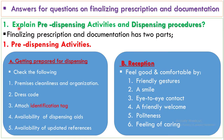The first question explains the predispensing activity and dispensing procedure. Finalizing prescription documentation has two parts: predispensing activity and dispensing activity. When looking at the predispensing activities, it has two parts. The first is getting prepared for dispensing, and the second is reception. To get prepared for dispensing, you have to check the following: premium screeners and documentation, dress code, attach identification tag, availability of dispensing gate, and availability of updated references.